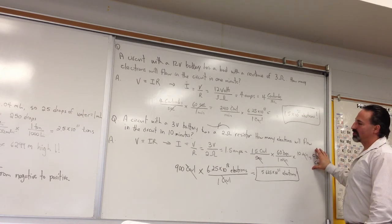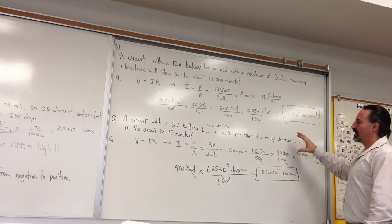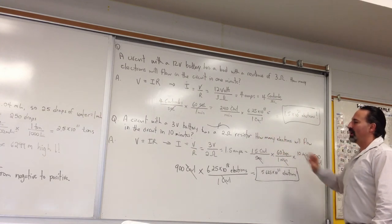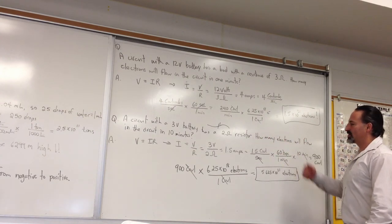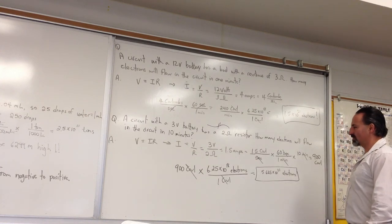And, here's another example for your perusal if you want to try to solve it. Try to look at it, try to just copy the question and try to do it without looking at the answer. But, here's the answer, it's 5.625 times 10 to the 21 electrons. Thank you.